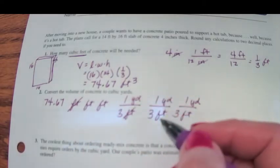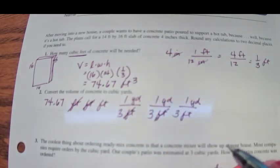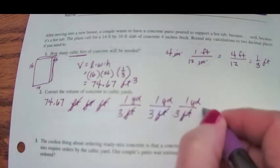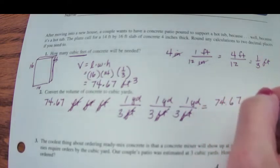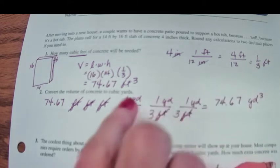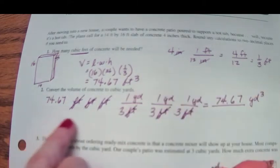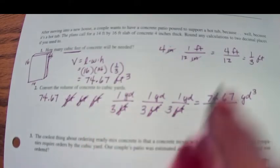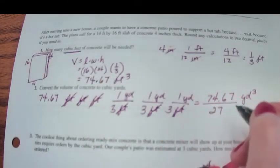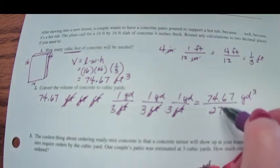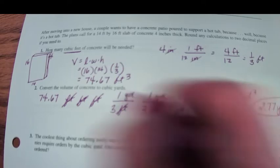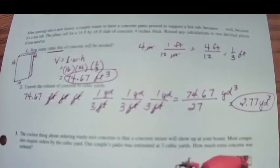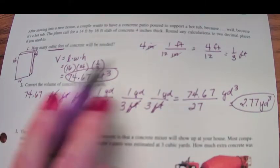Get rid of the foot in the numerator and denominator for all three. I am left with in my numerator 74.67 yard times yard times yard, it's cubic yards, and in my denominator 3 times 3 times 3 is 27. So 74.67 divided by 27 is 2.77 cubic yards. Let me go ahead and circle the answers here so you can see it, cubic feet, cubic yards.